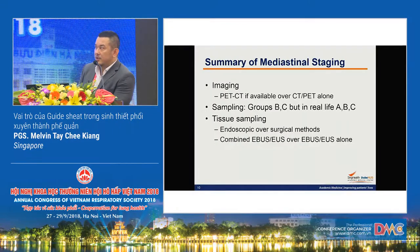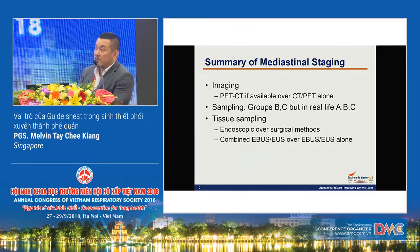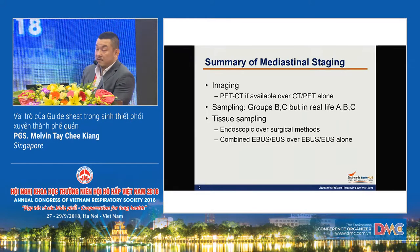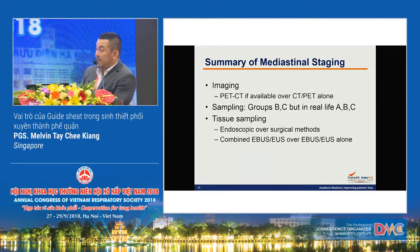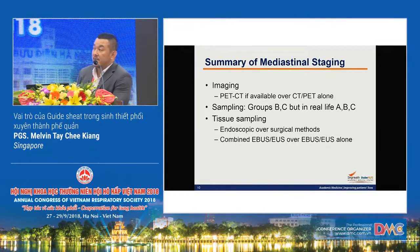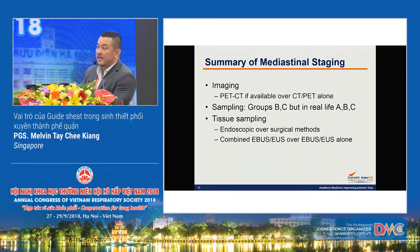In summary, mediastinal staging requires imaging first. There are many studies on sensitivity and specificity of CT alone versus PET-CT, but in most places nowadays if available we do a PET-CT together. However, we cannot stage the mediastinum confidently by radiographic methods alone, so we need invasive sampling. We usually sample groups B and C, but in real life we sample A, B, and C. The guidelines recommend endoscopy over surgical methods, as EBUS, EUS, or combined EUS and EBUS are as good as or better than traditional surgical methods.